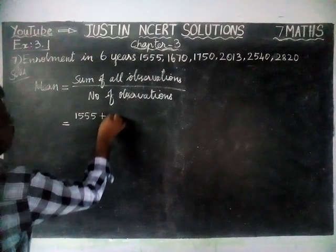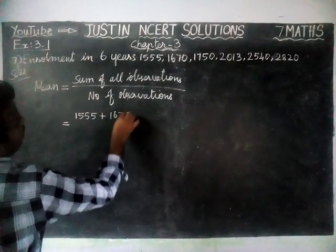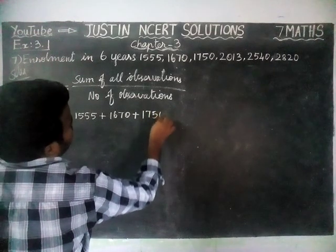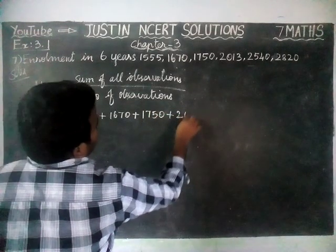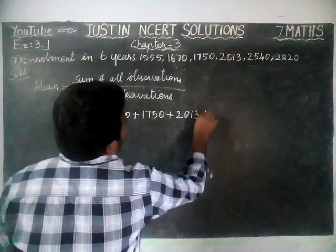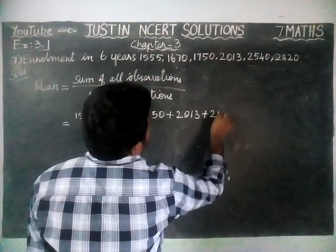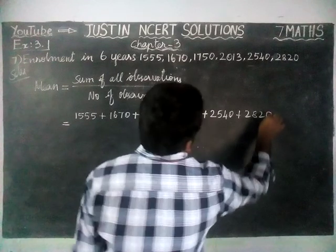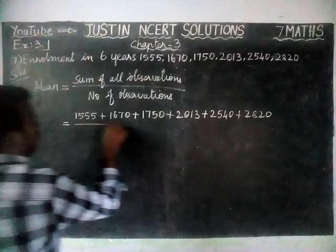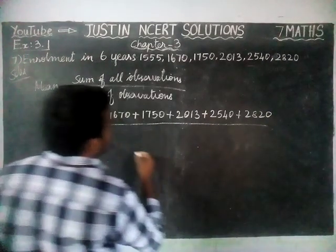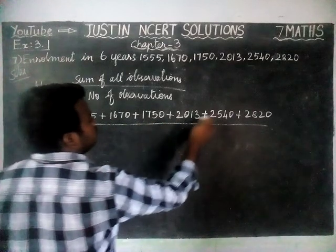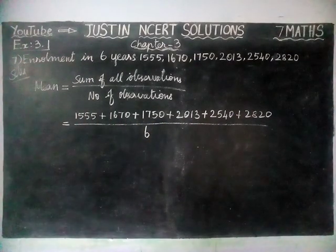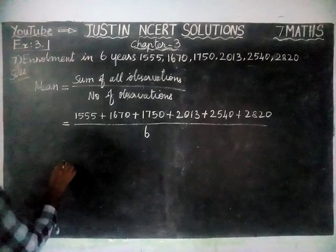Mean = (1555 + 1670 + 1750 + 2013 + 2540 + 2820) divided by 6 observations. So, the number of observations is equal to 6.